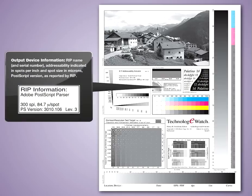Output device information: RIP name and serial number, addressability indicated in spots per inch, and spot size in microns. PostScript version as reported by RIP.